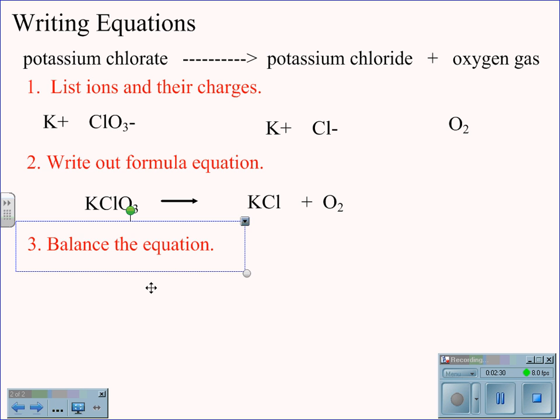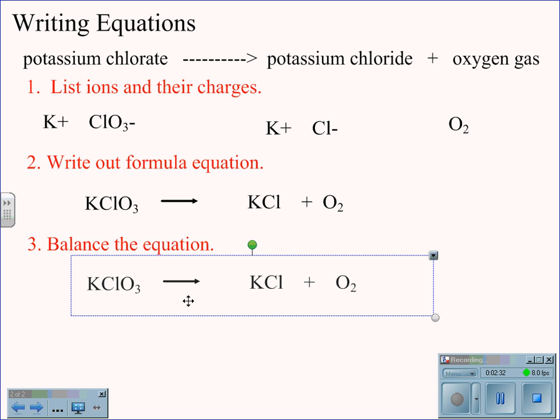Next we will balance the equation. KClO3 yields KCl plus O2. We notice that one K and one Cl balances from left to right, but the oxygen is three on the left while it is two on the right.